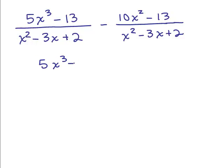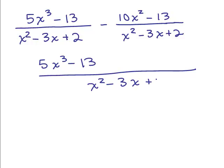So we are, again, going to subtract our numerators because I have a common denominator, right? The common denominator is x squared minus 3x plus 2. Let's do this all in one step here. If I'm going to subtract that numerator it's going to change signs, so that will be a minus 10x squared and a plus 13.